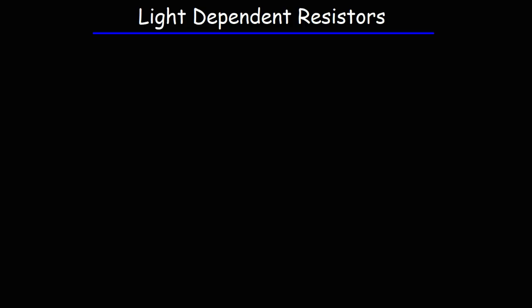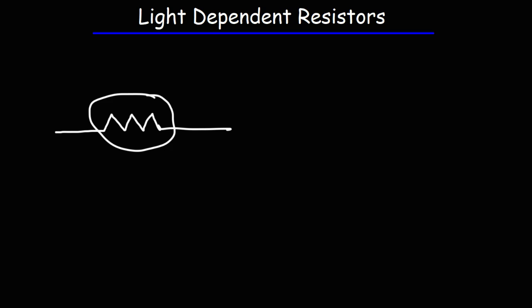This element is known as the LDR — the light dependent resistor. The symbol for a resistor is enclosed in a circle, and then two arrows are drawn facing towards it, which represents the incoming light shining upon it.